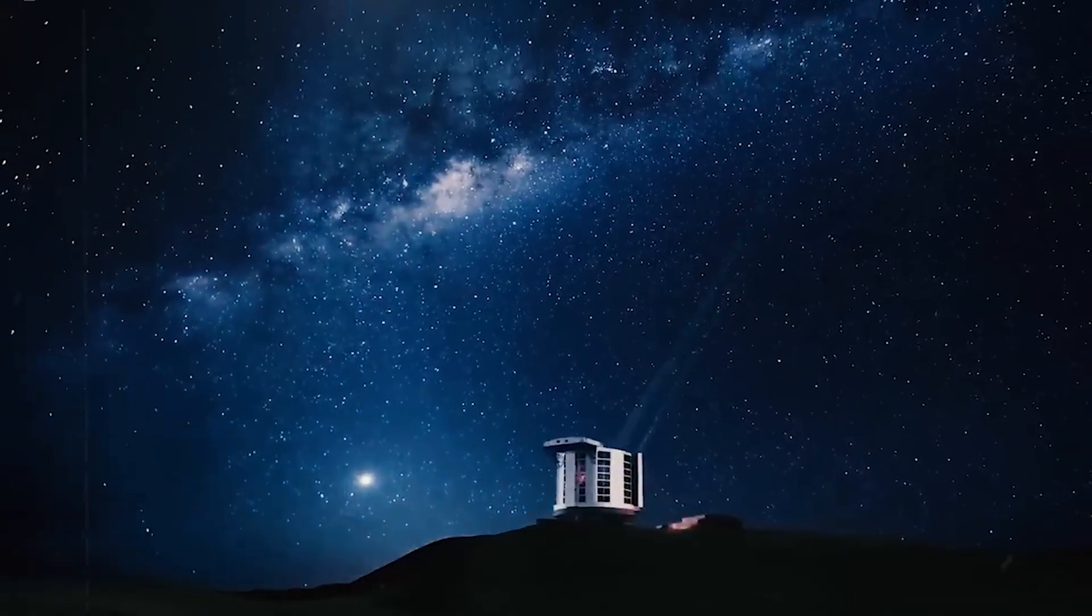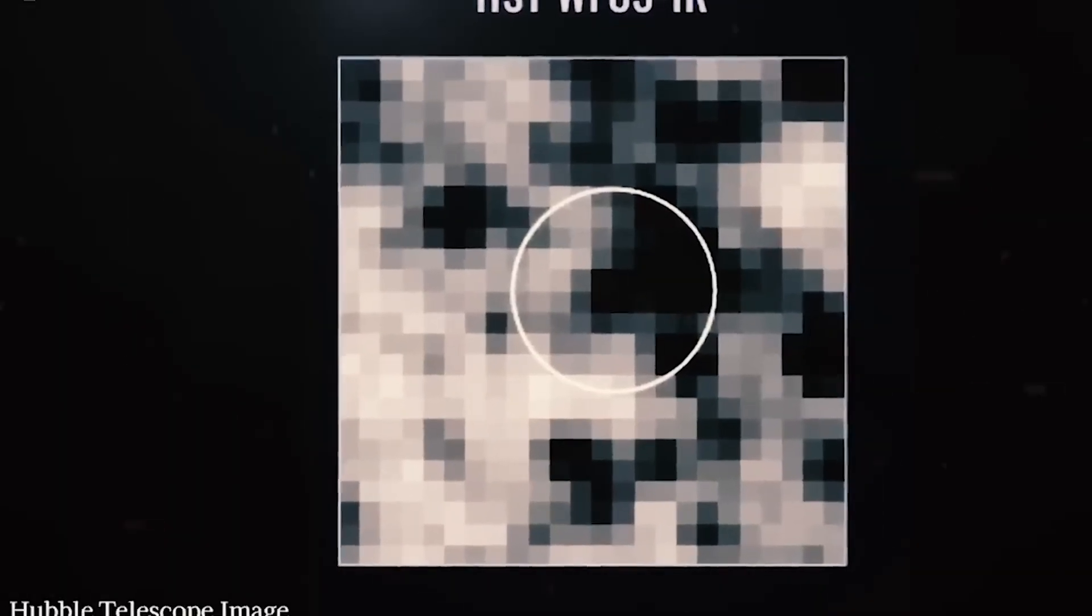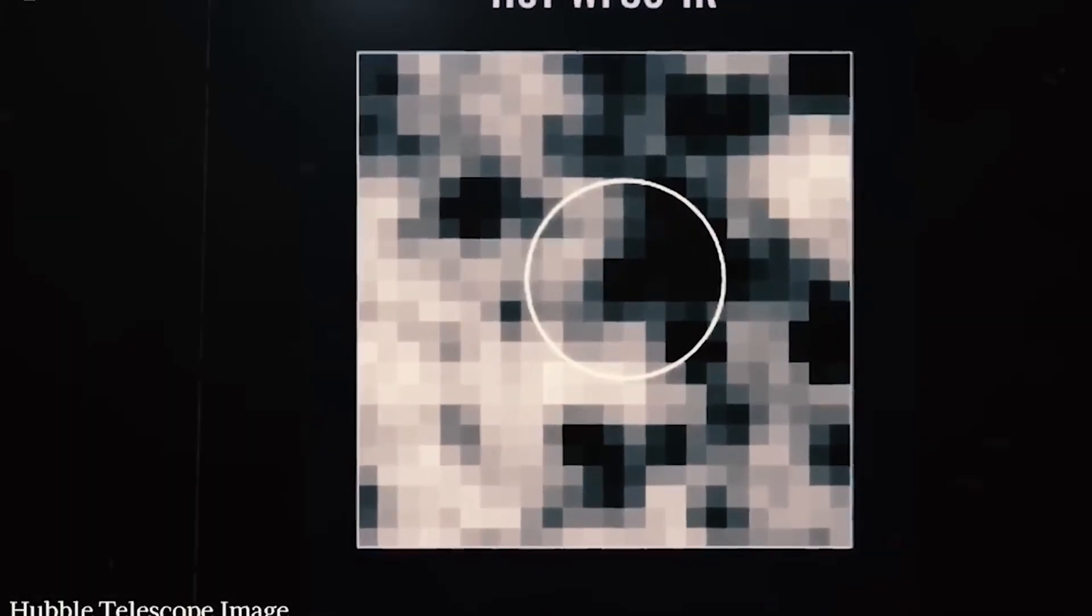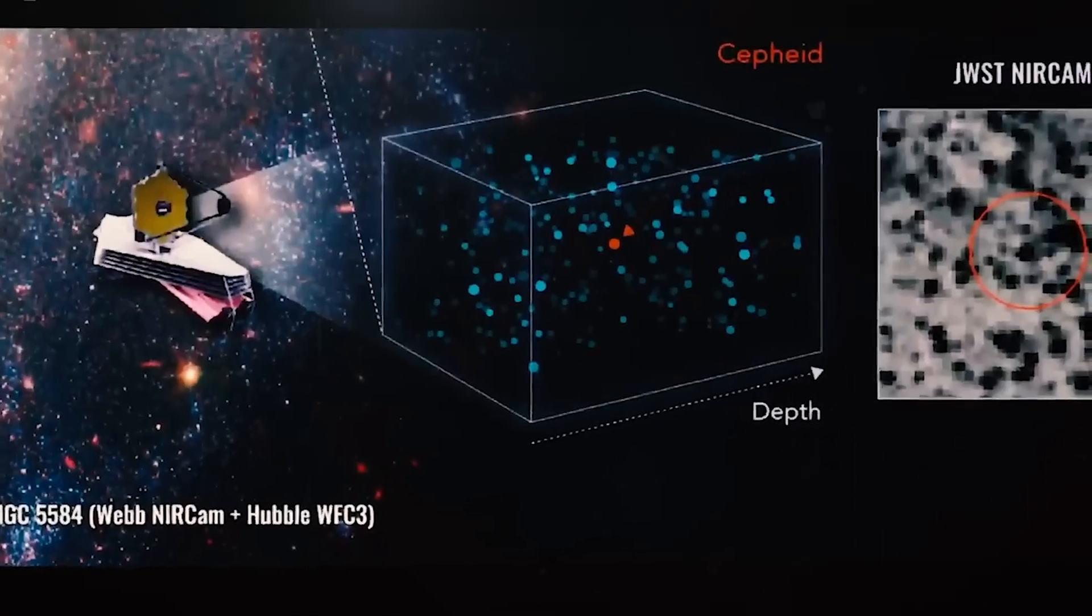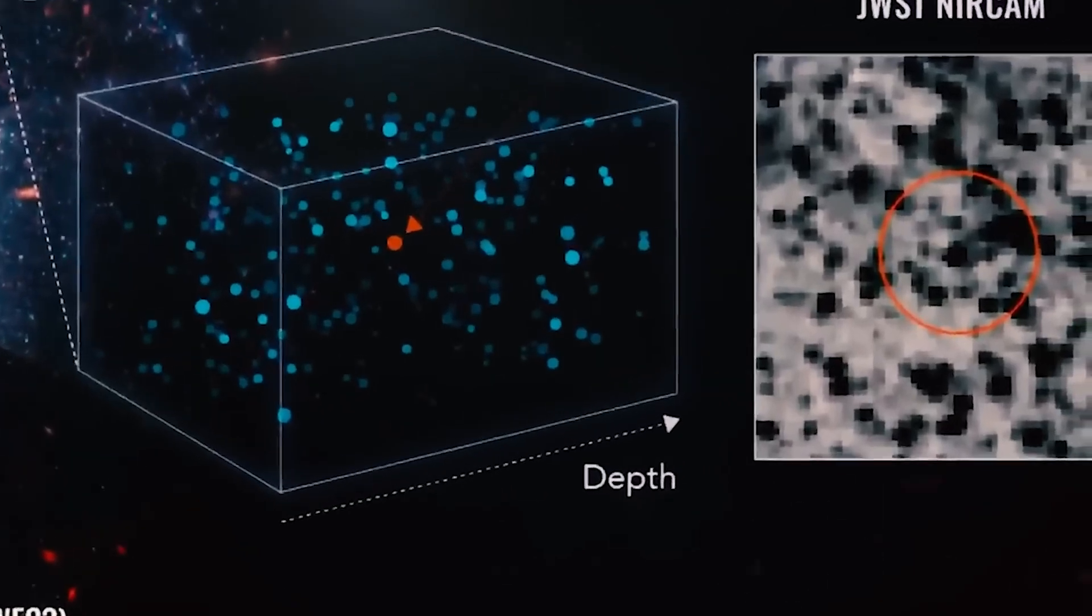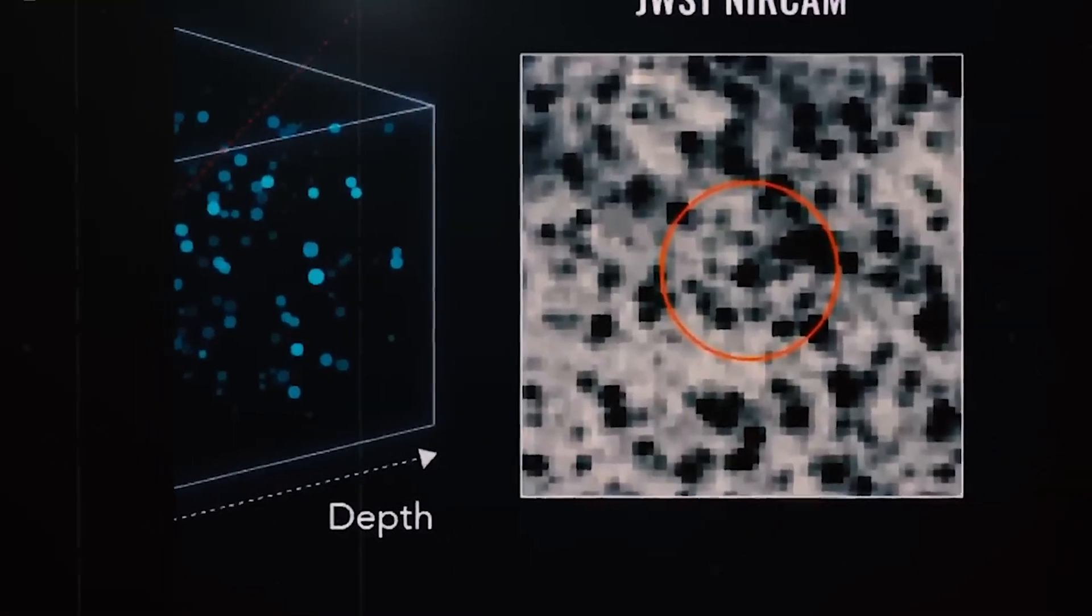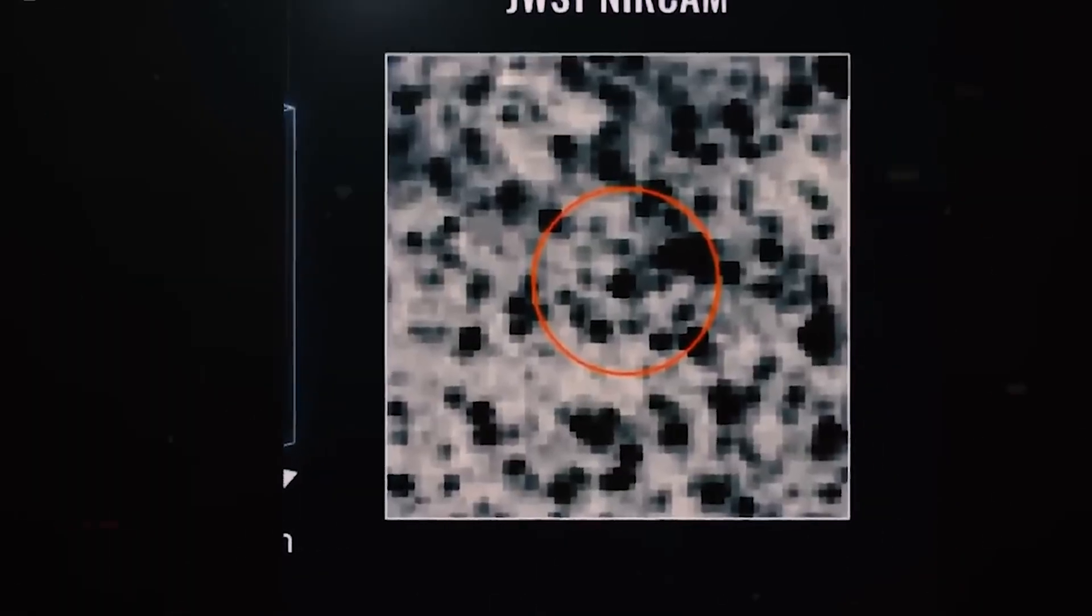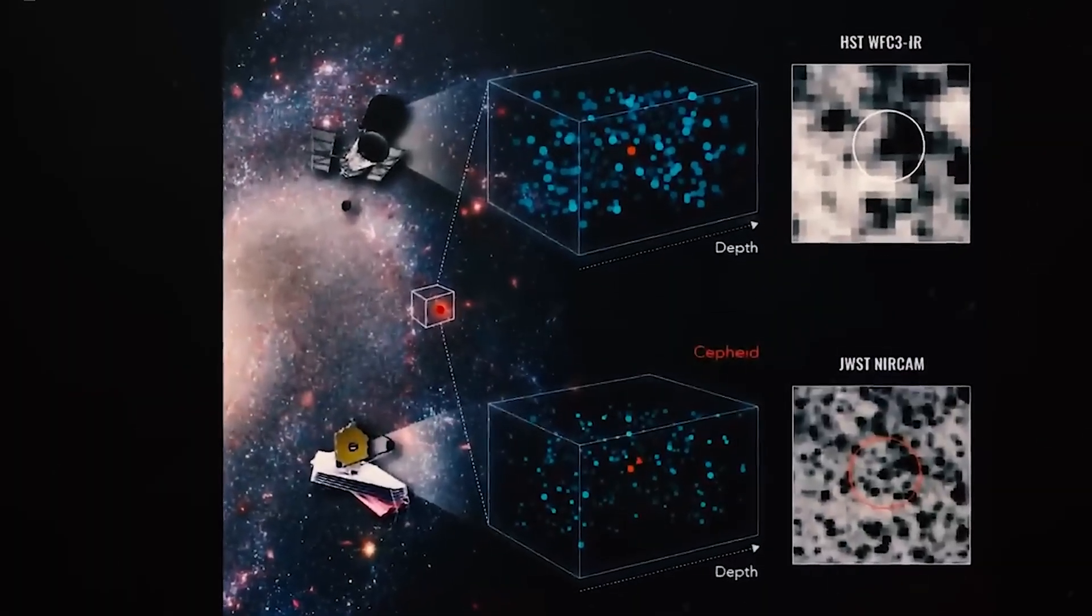When astronomers observe these stars using ground-based telescopes, or even the Hubble Space Telescope, their view can be muddled. Nearby stars often blur together, much like trying to read a distant sign surrounded by visual clutter. This is where the James Webb Space Telescope truly shines. Thanks to its powerful infrared vision, Webb can cut through cosmic dust and isolate Cepheid stars with remarkable clarity, avoiding confusion from neighboring stars.